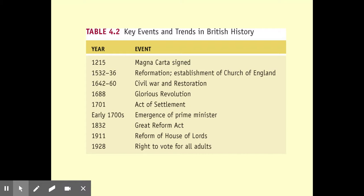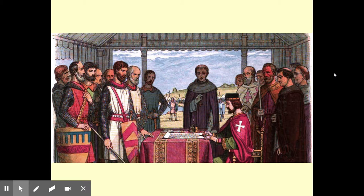Some key events: in 1215, the Magna Carta was signed — the first constitutional document. In 1532–36, the Reformation caused acts of Parliament to be used by the monarch to establish the Church of England. In 1642–1660, the civil war between Parliament and the monarch. In 1688, the Glorious Revolution, when Parliament removed one monarch and replaced him with another. In 1701, Parliament's authority to pick a new monarch if the previous one had no children was established. Eventually the Cabinet system emerged, with the leading minister called the Prime Minister. In 1832, the Great Reform Act tried to make the electoral system more representative. In 1911, the House of Lords was reformed, restricting its power. And in 1928, the right to vote was extended to all adults, including women.